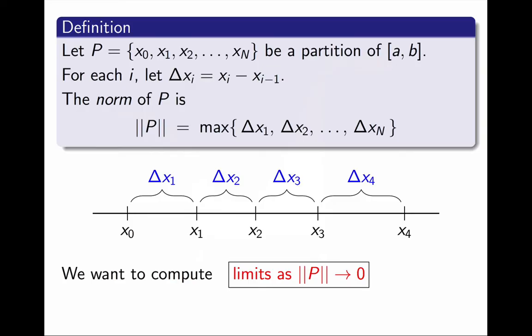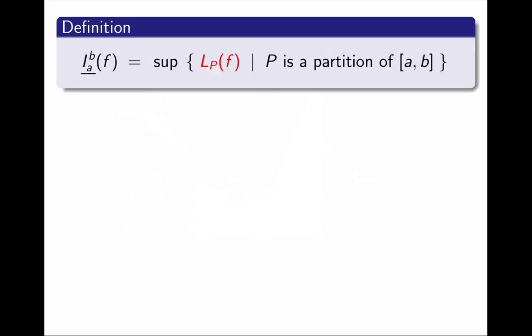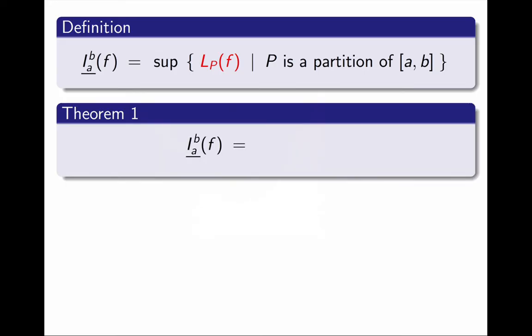More specifically, the definition we chose for the lower integral is the supremum of all the lower sums. When I use all partitions of the interval [a,b], this is what we knew. But now we have a new theorem. The lower integral can also be calculated as the LIMIT of the lower sums as the norm of the partition approaches 0.